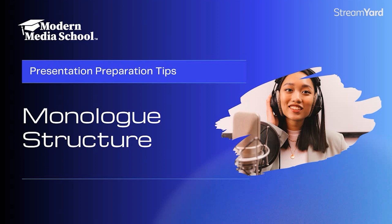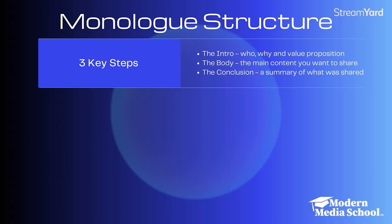There are three key steps to a monologue structure, and this structure can be followed with a podcast of any format. This is just basic storytelling 101. First, you have the intro — you tell the who and the why, set up the scenario of what it's about, and deliver a value proposition to your audience. Then you have the body, which is the main content you want to share — what the show actually is and the majority of what it will be.